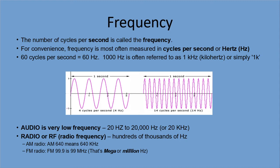Frequency is the number of cycles per second — the number of waves you get in the radio wave every second. Frequency is most often measured in cycles per second, but nobody says that; they call it hertz, abbreviated Hz — capital H, lowercase z. So 60 cycles per second, which is the current in your Canadian household, is 60 hertz.